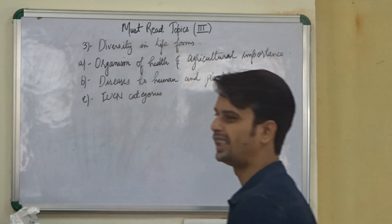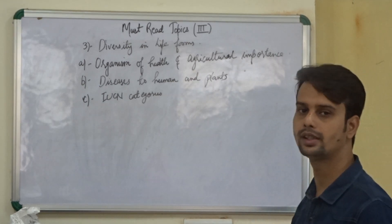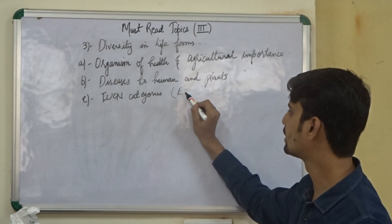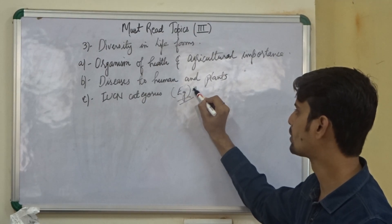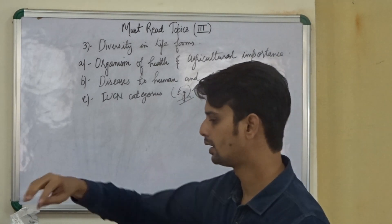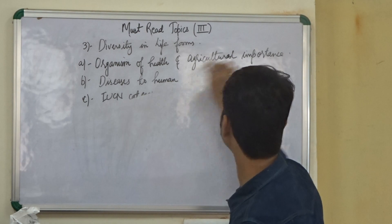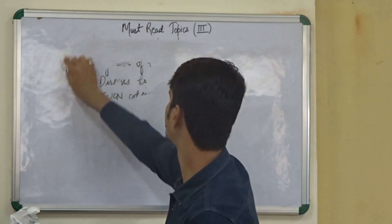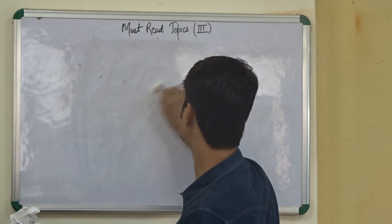In this, there is endangered species, extinct species, vulnerable species. So what are the examples in those categories are also important. So this completes the third topic. And finally we will be going to our last topic of this part of the video, that is ecological principles.